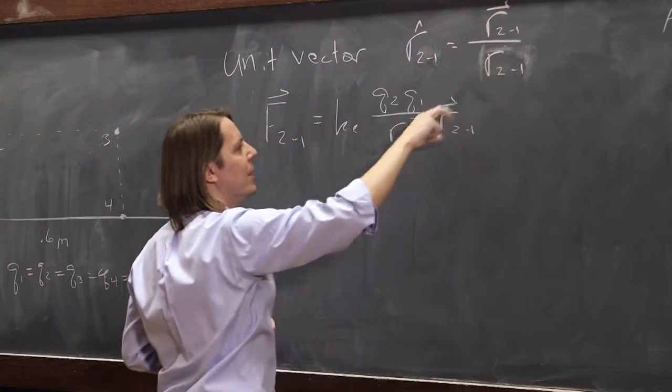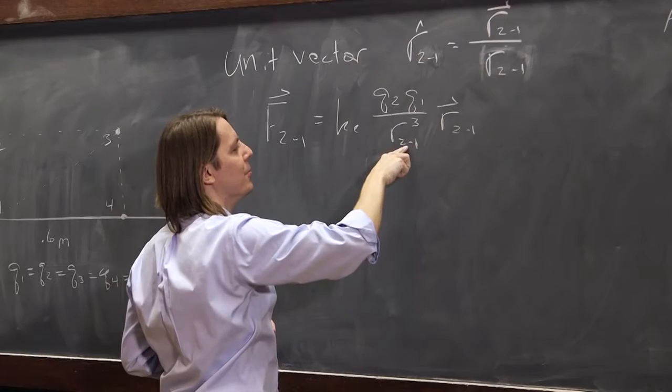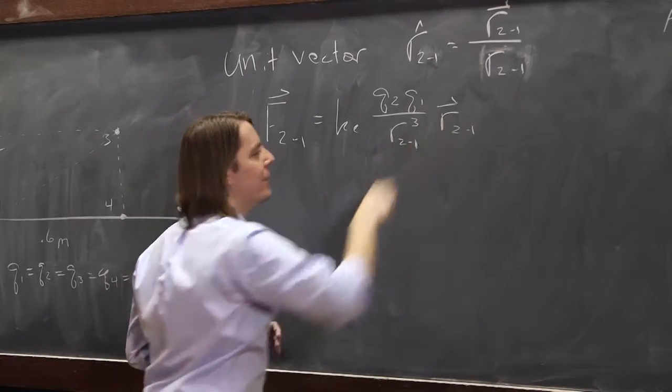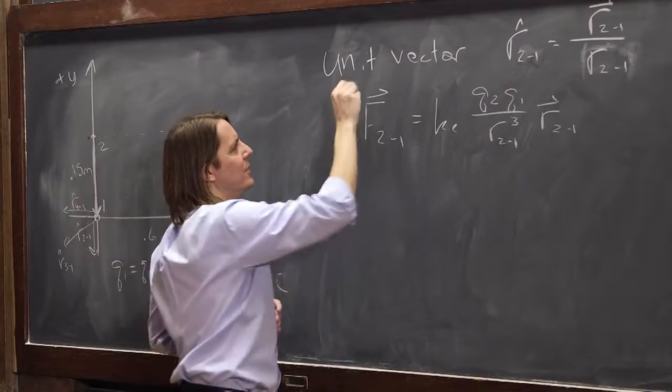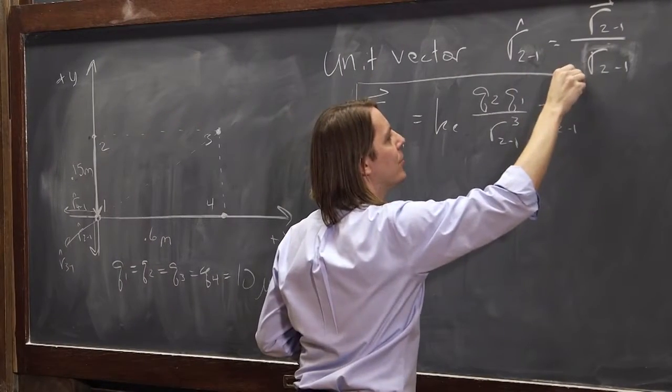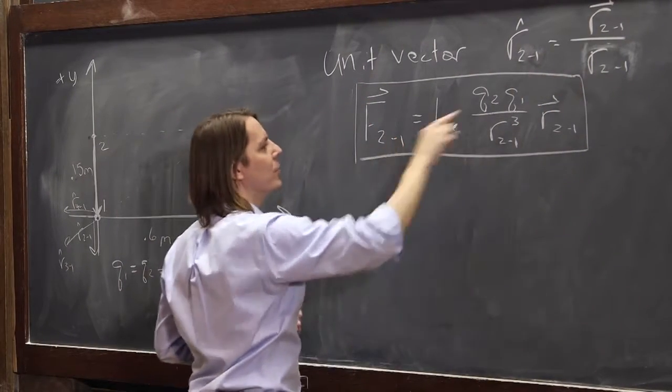So before, we had r hat 2,1 sitting here. So now if I bring that here, that puts another r 2,1 in the bottom and now it's cubed. But I have an r vector 2,1 there. Okay? So when I write it this way, is it different? Is it some different Coulomb's Law? Is it a Coulomb's Law that goes as 1 over r cubed? No.